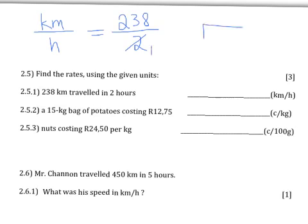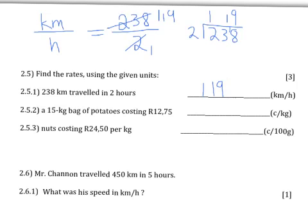Dividing the denominator by two gives us one, and 238 divided by two gives us 119. So that means we have 119 kilometers per one hour. The fraction line represents 'per.' The first answer is 119 kilometers per hour. Moving on to 2.5.2.